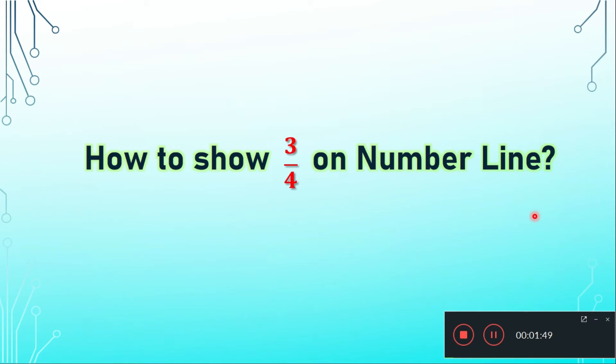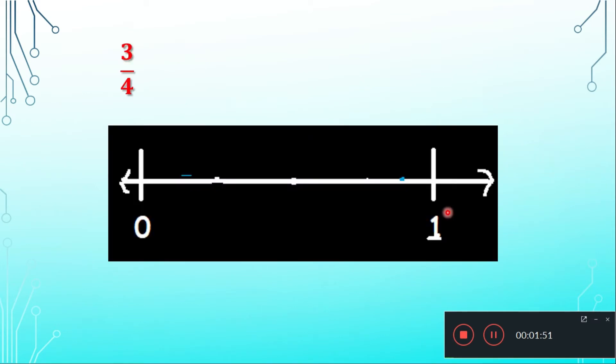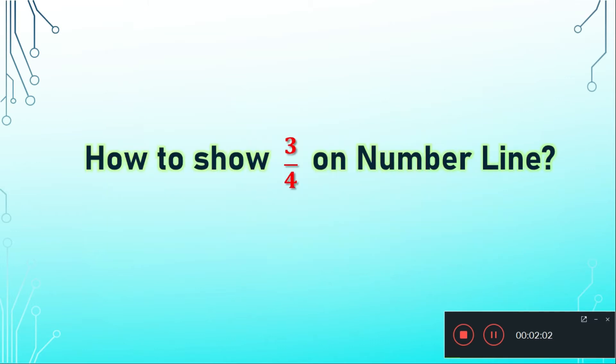Now let's see how to show 3 upon 4 on a number line. First of all we need to draw a number line from 0 and 1. Now you must be thinking why we have marked 0 and 1 here.